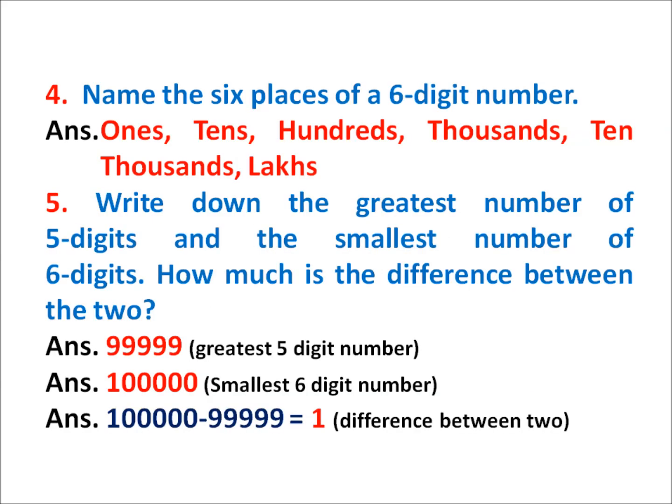Now, question 4 is: Name the 6 places of a 6-digit number. As I discussed, you have to write the places of a 6-digit number. Recall it — the places of a 6-digit number are: 1s, 10s, 100s, 1,000s, 10,000, and lakhs. I think all of you have understood it.